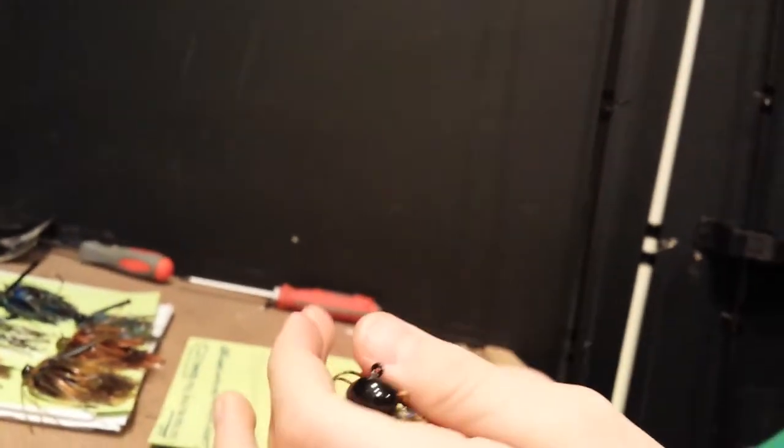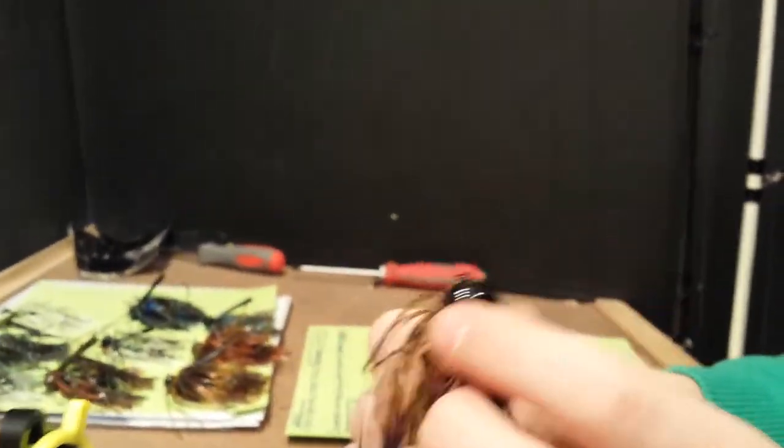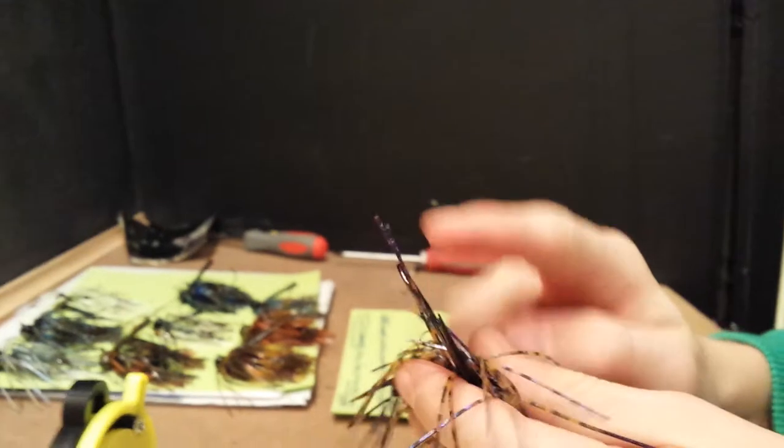Next one is just your good old PBJ, 3.8 ounce black head. And all these do have Mustad hooks, my favorite hooks. And they're sticky sharp.